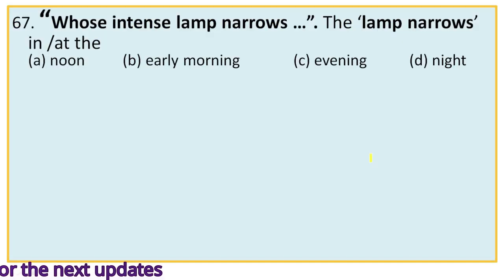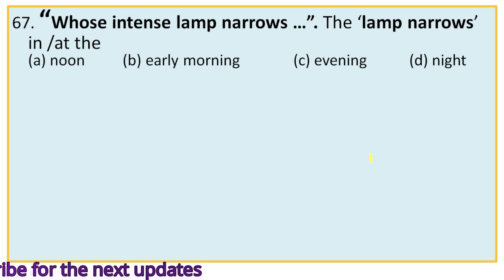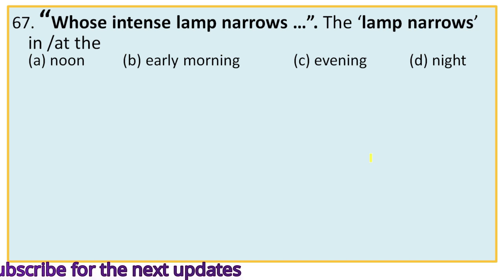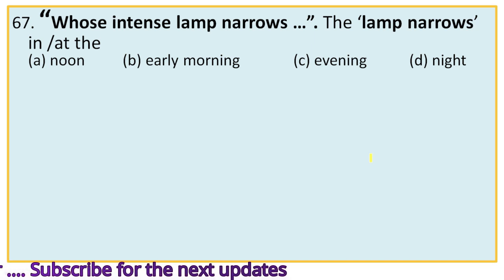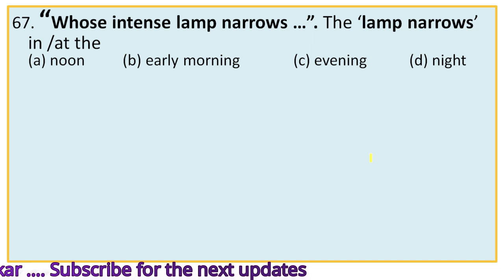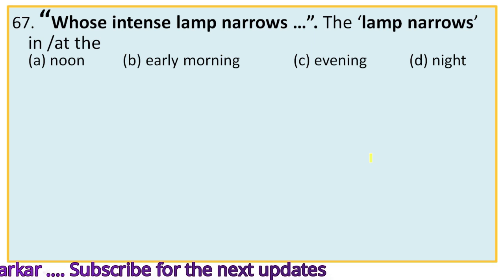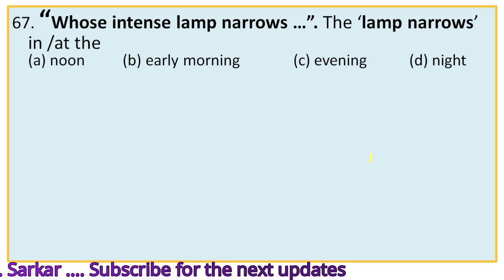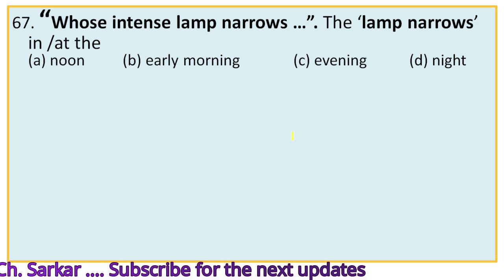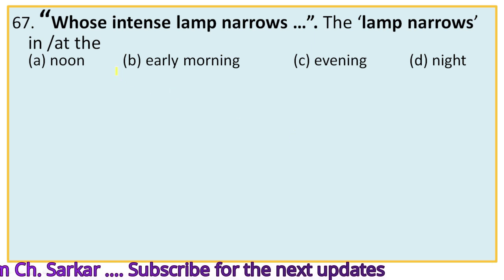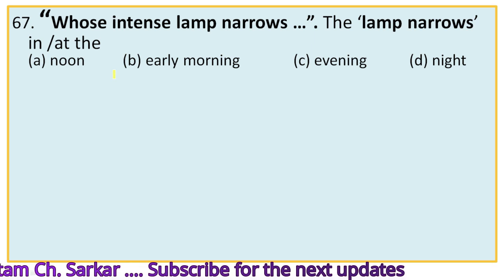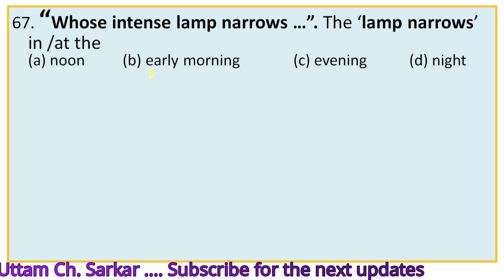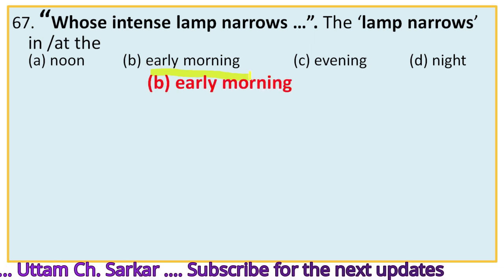Question 67: 'Whose intense lamp narrows.' The full lines are: 'Whose intense lamp narrows in the white dawn clear, until we hardly see, we feel that it is there.' Here it refers to the moon in the early morning — the moon remains invisible. The intense light of the silver sphere, moon, or possibly Venus, gets weaker in the early morning. So the right option is B, early morning.